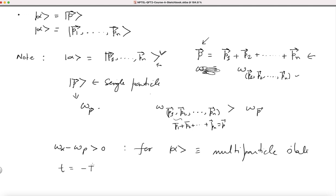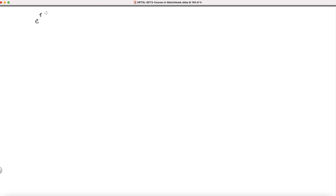For that, I will take t equal to minus T times (1 minus i epsilon), where T is a large time — so it is a large negative time — and epsilon is a positive, small but fixed number. You choose whatever you like, but keep it fixed. I will eventually take T to infinity.